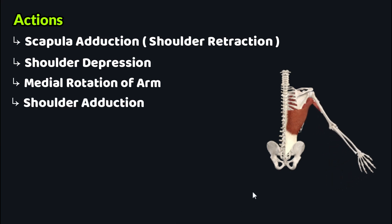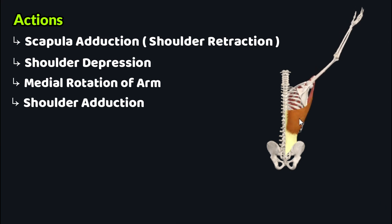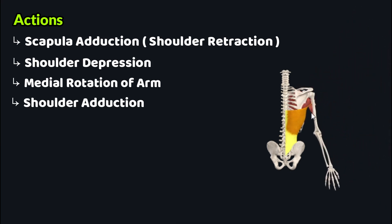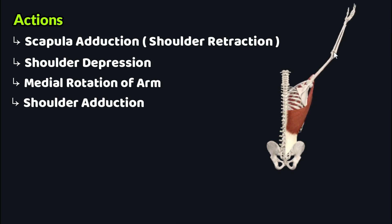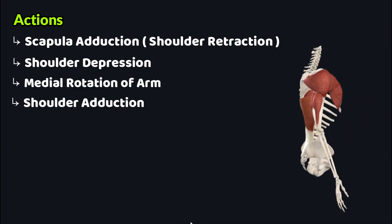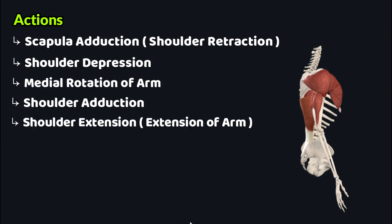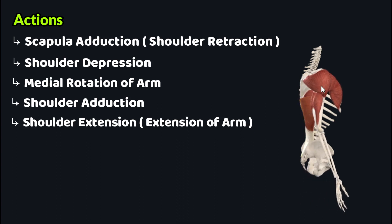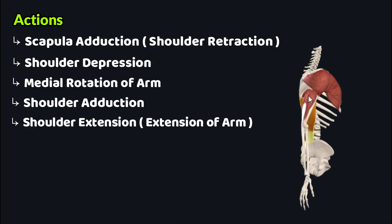The fourth action of the latissimus dorsi is shoulder adduction. When this muscle contracts, it acts on the proximal part of the humerus and draws the humerus toward the thorax, decreasing the angle between the arm and the thorax. The fifth action is shoulder extension — on contraction, this muscle acts on the proximal part of the humerus and extends the arm. The triceps muscle also assists the latissimus dorsi in this action.